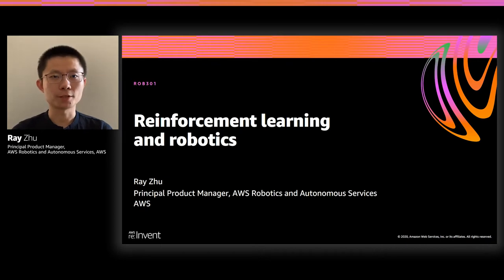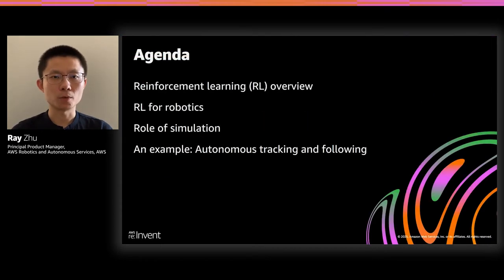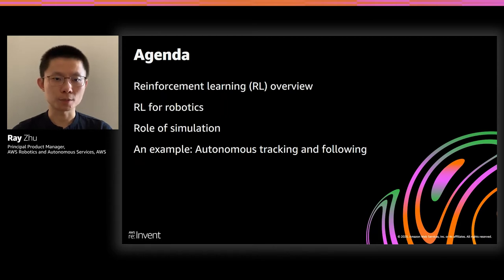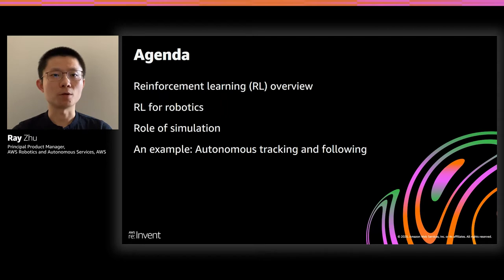Here's a brief overview of today's agenda. To start the session, we will give an overview of the reinforcement learning concept so that you understand what it is and how it works. Then we will talk about how reinforcement learning, or RL, is related and relevant for robotics and what the applications in robotics are. Next, we will talk about a key technology called simulation that's really important for using reinforcement learning to solve robotics problems. And finally, we will walk you through an architectural example about how to use AWS services to do reinforcement learning training for robotics.